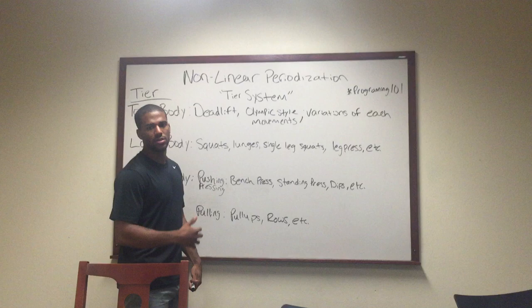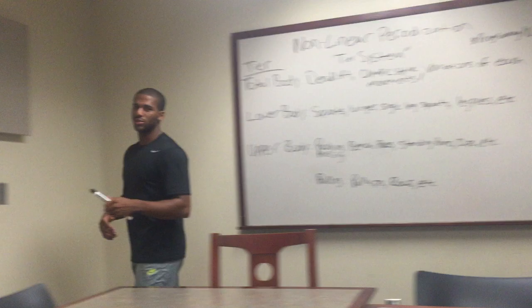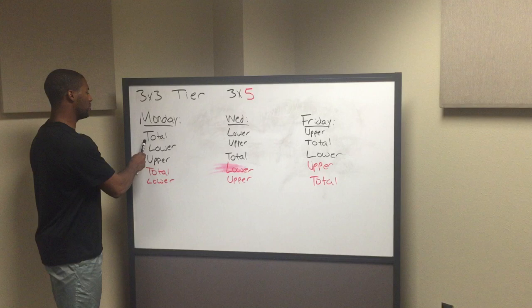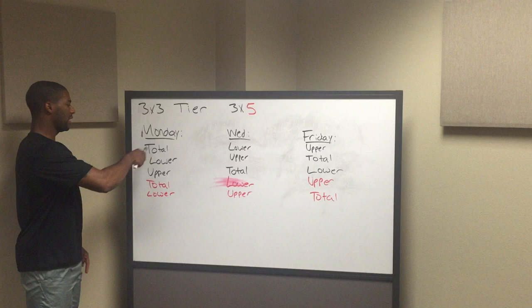Moving over to the board to show how it's broken up: it's broken into three tiers, and you always follow this order — total, lower, upper. Here in the black we have a three-by-three tier. On Monday you have total body, lower body, upper. Wednesday: lower, upper, total. Friday: upper, total, lower. It always follows in that order.